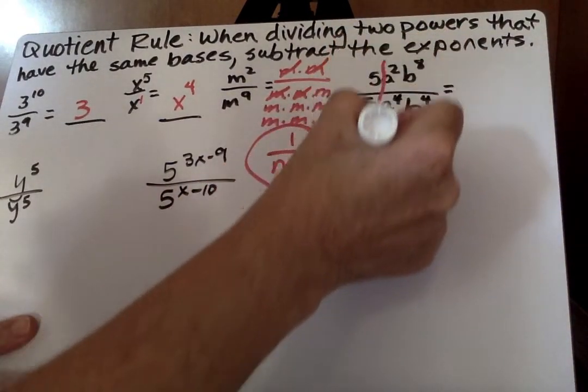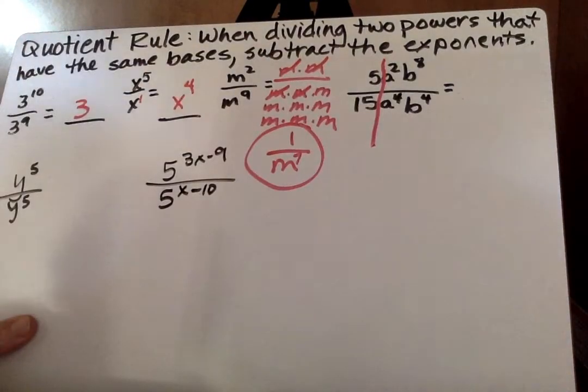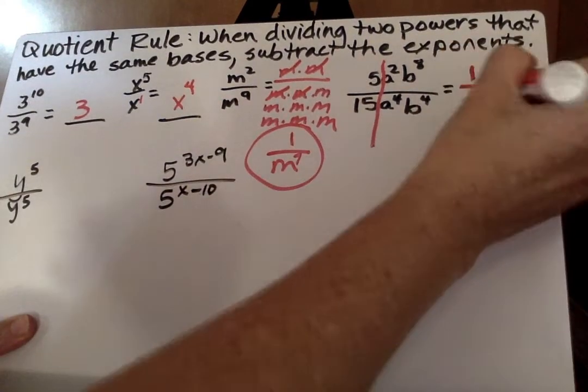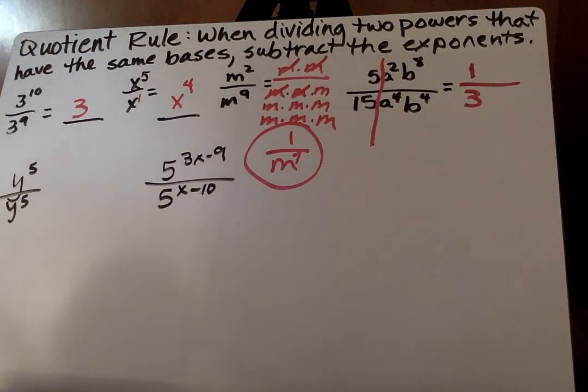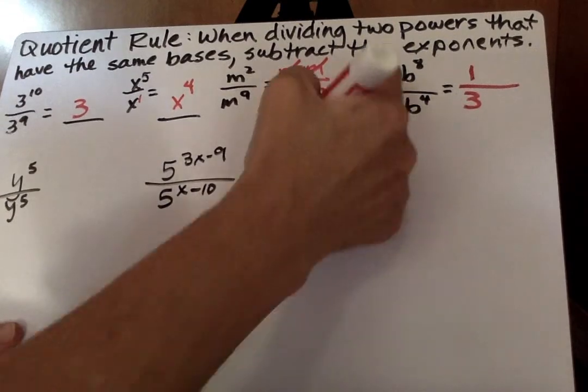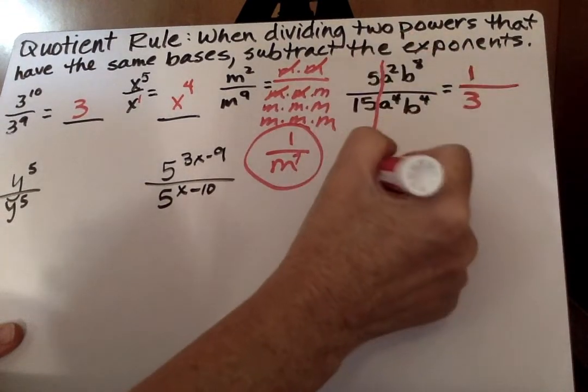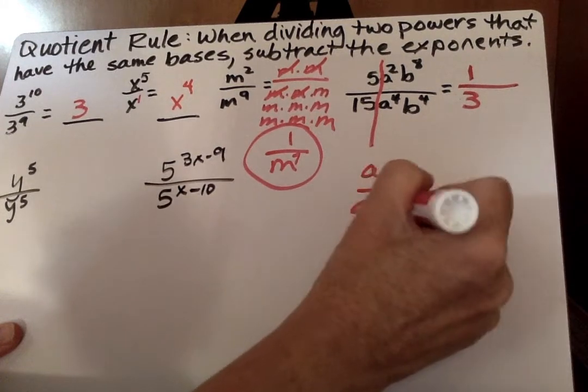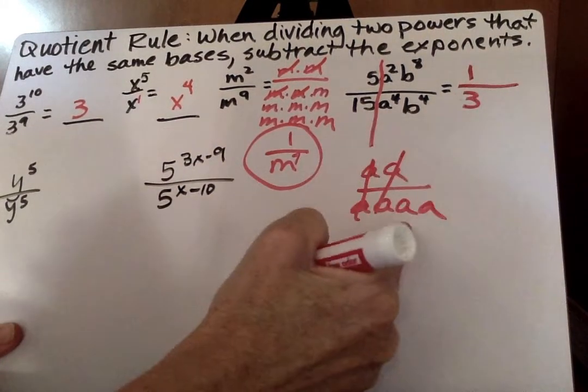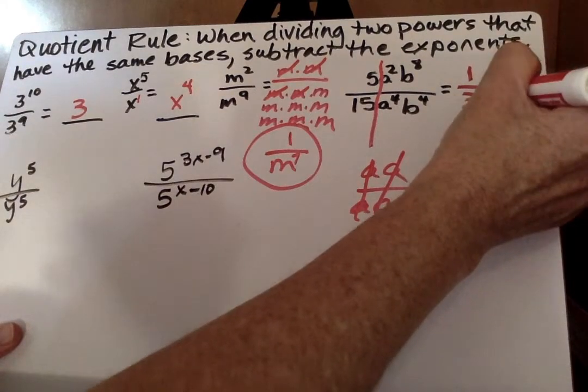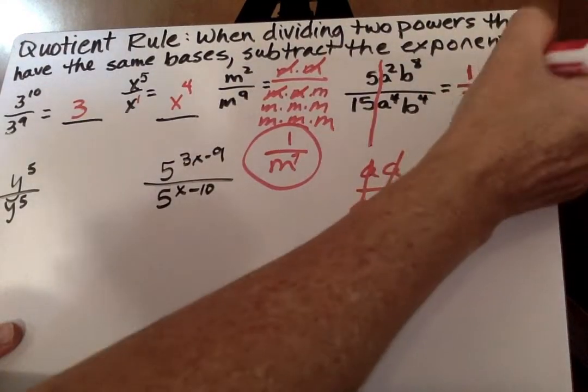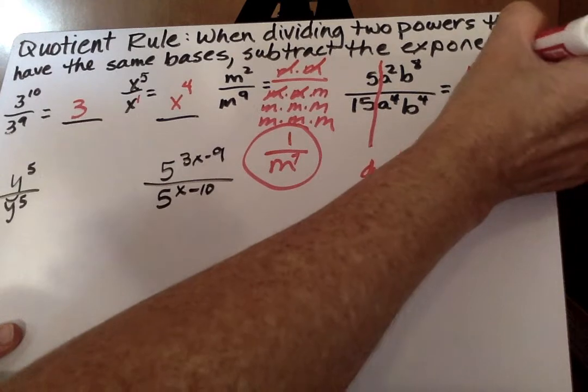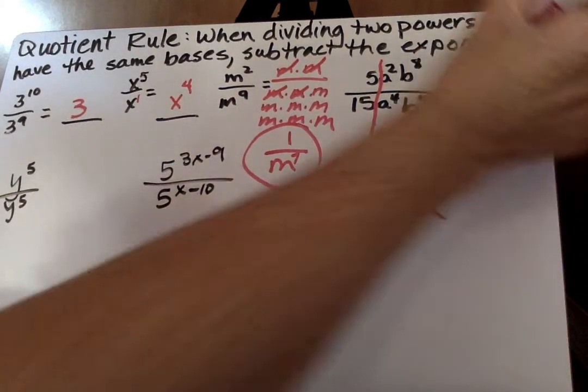Then we move on to this. I'm going to go ahead and separate that out. 5 over 15. Some of you might try that and get 3, and you would be mistaken, because it's 1 third. Then A's. Where are the most A's? There's 4 A's on the bottom and 2 A's on the top. So if I go for every A on the top over 4 A's on the bottom, I'm left with the bottom having 2 A's left. So it's A squared. Then B's. There's more B's on top. 8 minus 4 is going to be 4. There you have it.